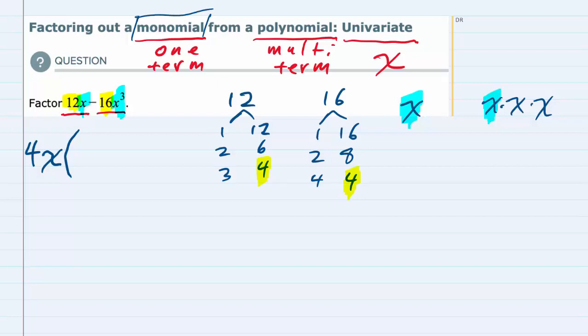So if I were to factor out a 4x from that first term, which is the 12x, what would be left? Well, to determine what goes in the parentheses, I can divide by 4x. The x's would cancel and 12 divided by 4 is 3, so that means from the first term I only have a 3 left.